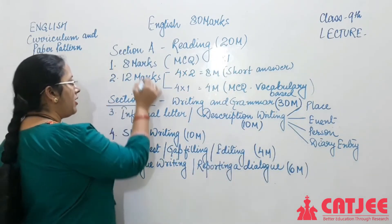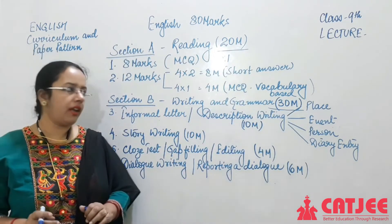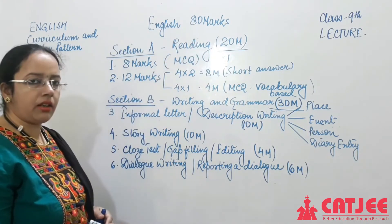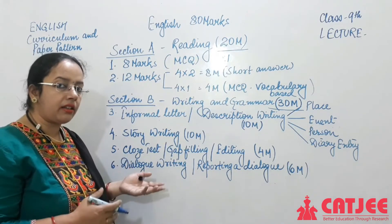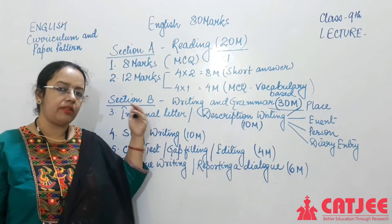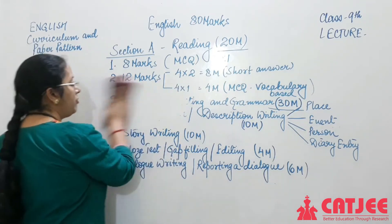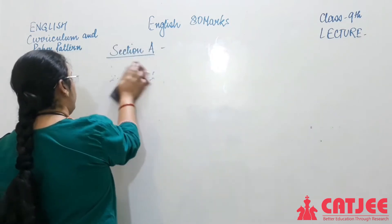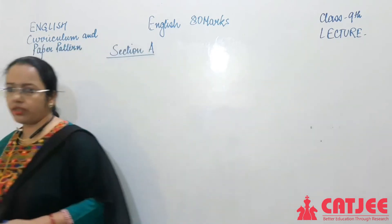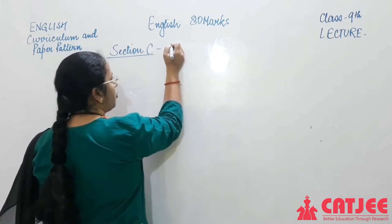So Section B: 6 plus 4 is 10, plus 10 and 10, means Section B is of 30 marks. Section A is 20 marks and Section B is 30 marks, so we have reached 50 marks, with 30 marks still remaining. Now we move to Section C, which has to be Literature.